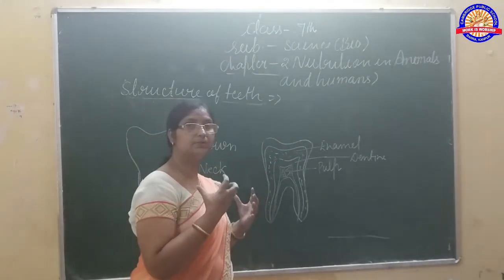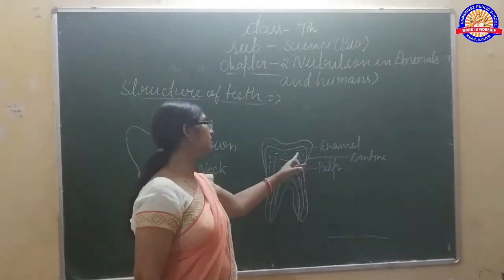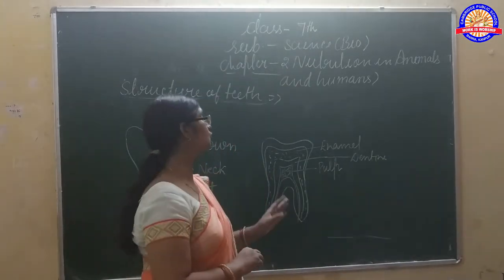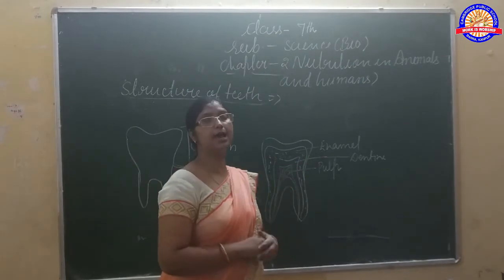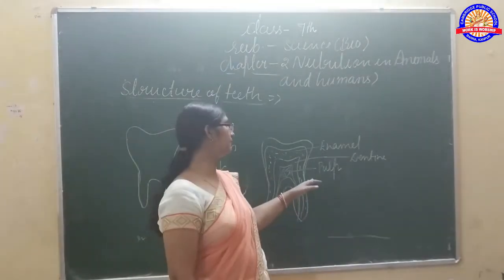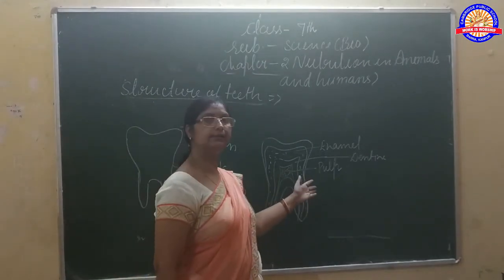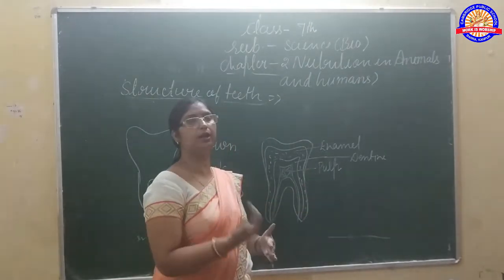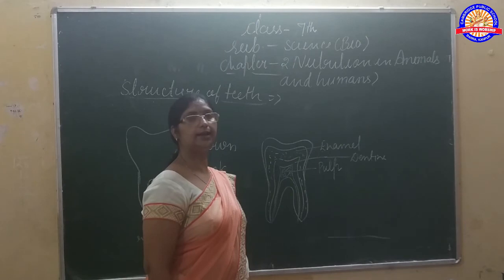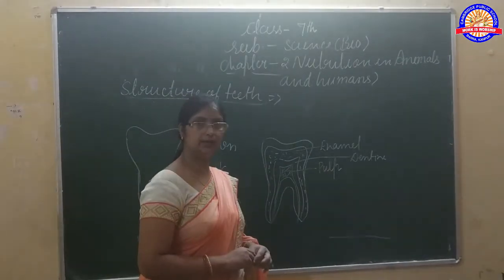The hard substance in our body is enamel. Enamel contains calcium salts. Next is dentine, which is a hard, bone-like structure. Inside the dentine is the pulp cavity, which is soft and contains blood vessels and nerves.